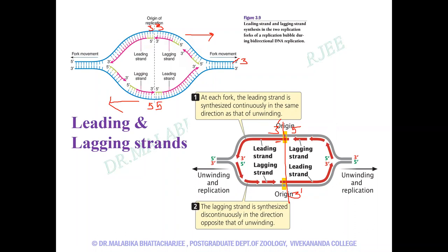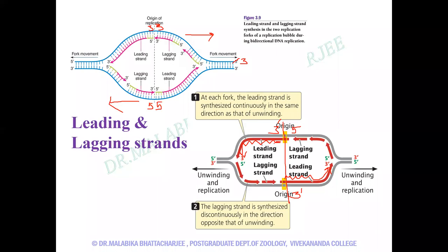Keep in mind that at the three prime end, the five prime end of the mRNA sits, and the leading strand is synthesized continuously. This picture very clearly emphasizes that the double-stranded DNA is opened up at one particular point and the replication fork proceeds in both directions. The mRNA primer is sitting here; this is the three prime end of the mRNA on one side and the five prime end on the other. Since the three prime end is facing the replication fork, this is the leading strand.